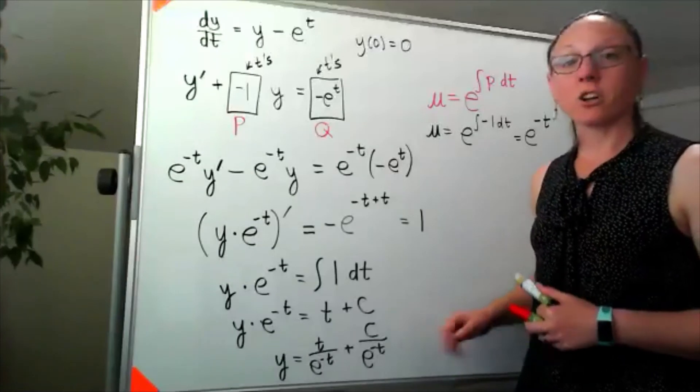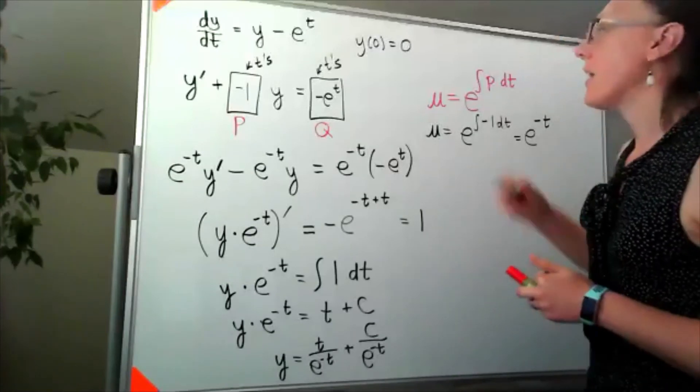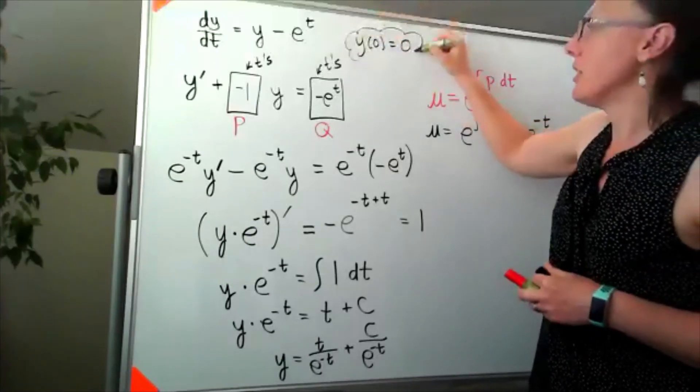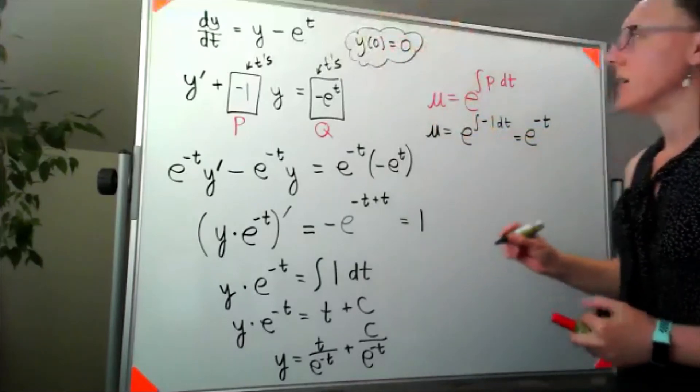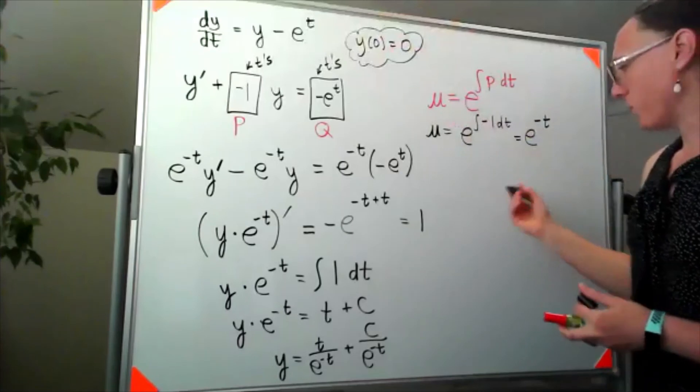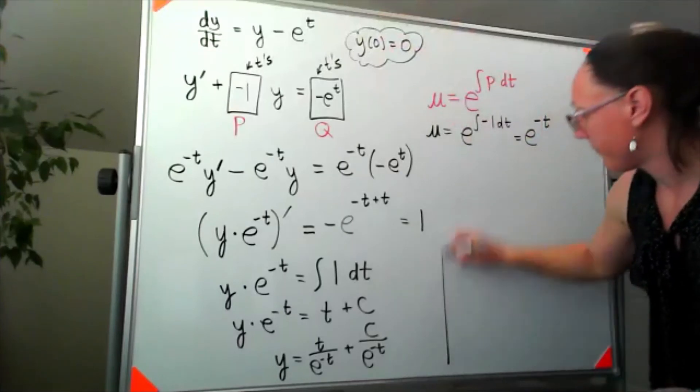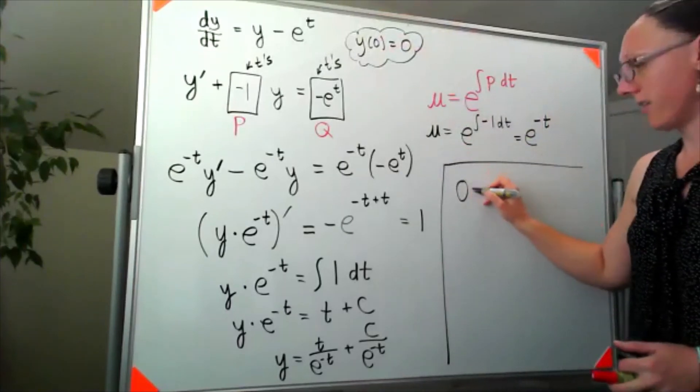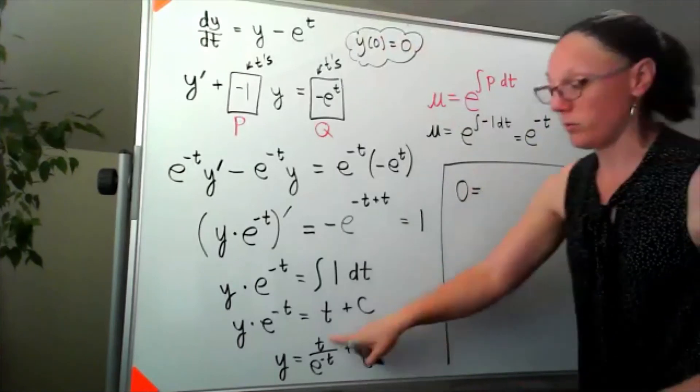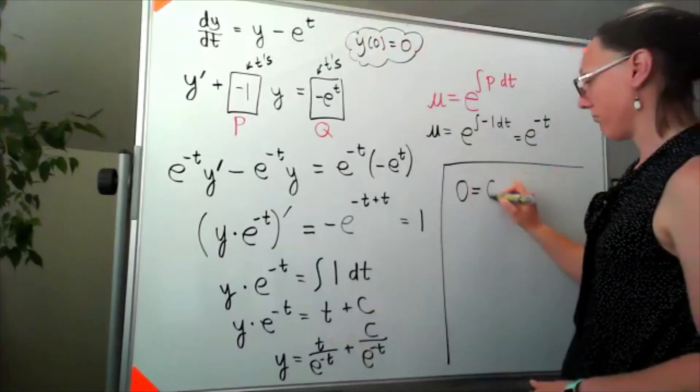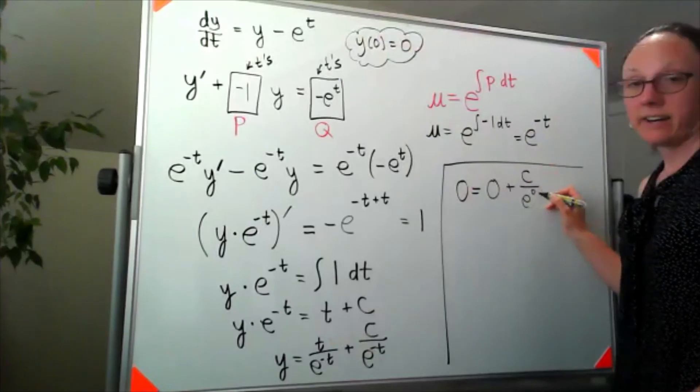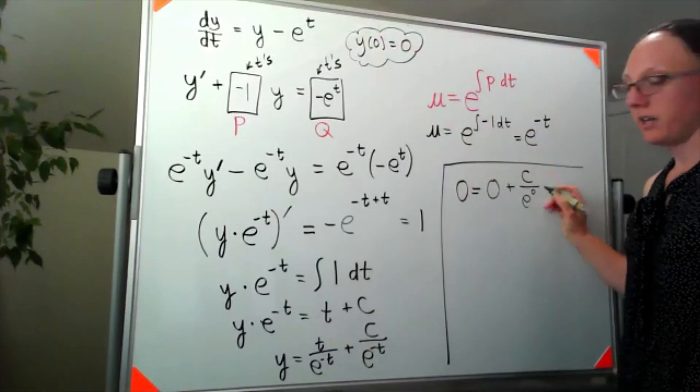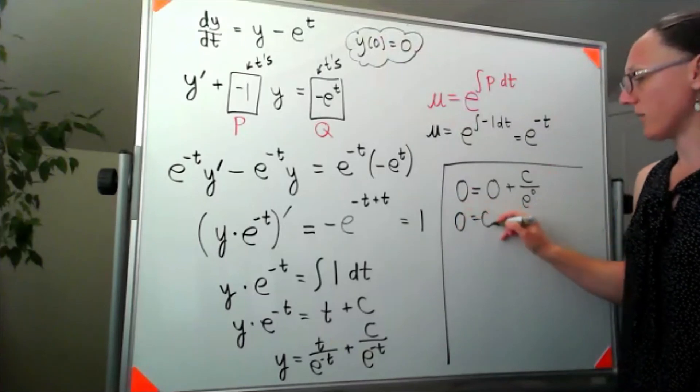We're almost done. This is our general solution, but because we were given an initial condition, we do want to go ahead and solve for that c value. If y of zero is equal to zero, then I would be looking at zero is equal to—when I plug in zero for t, that's a zero—plus c over e to the zero. E to the zero is one, which means I'd have zero is equal to c. Okay, that's fine.